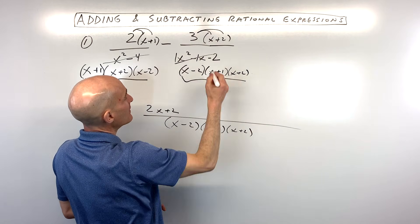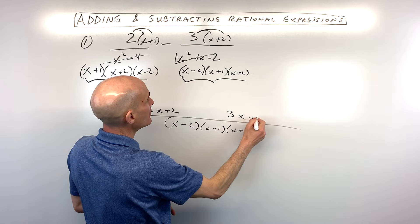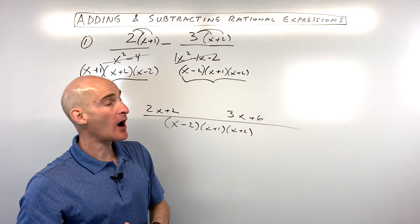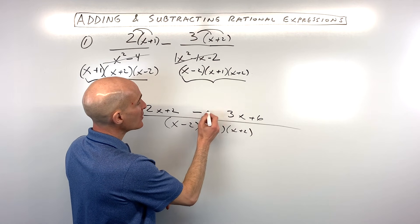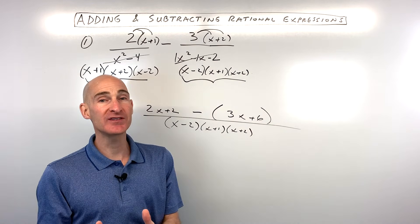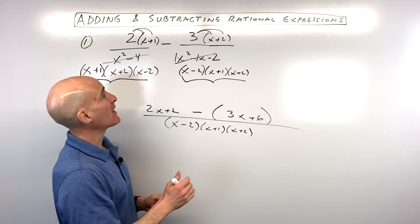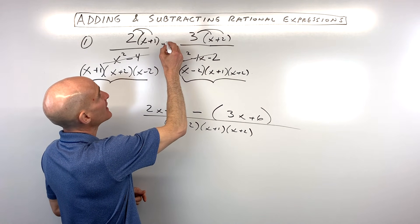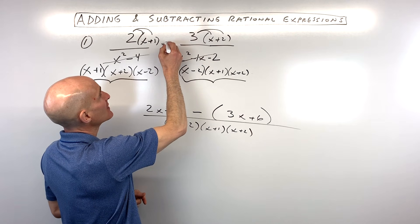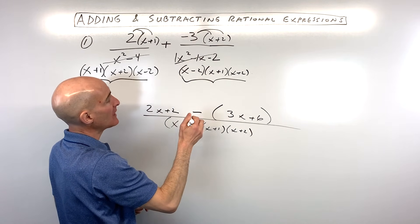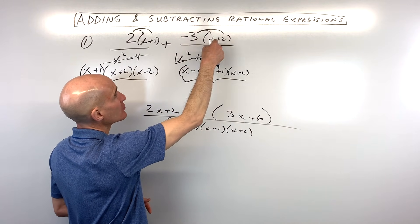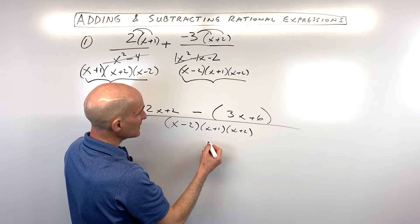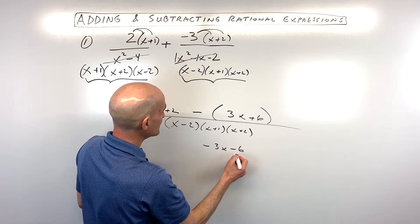Now I'm going to distribute the 3, giving us 3x plus 6. But notice this subtraction sign — this is where students sometimes go off track. You're subtracting this whole quantity, so put it in parentheses. An alternative is to think of it as adding the opposite: plus a negative 3, then distribute the negative 3 to get negative 3x minus 6.